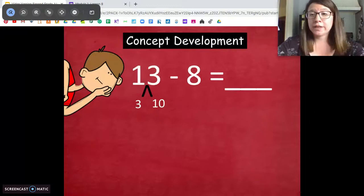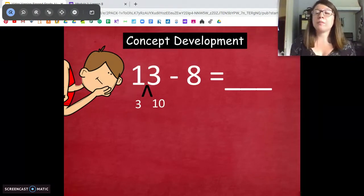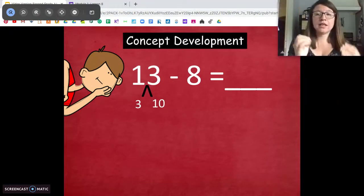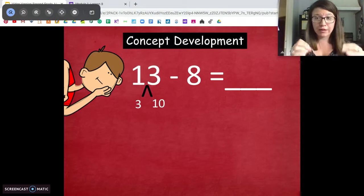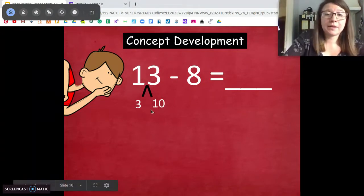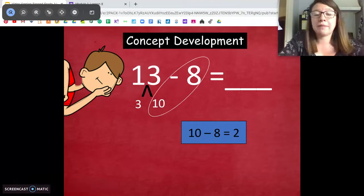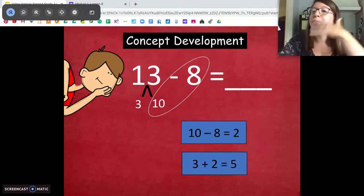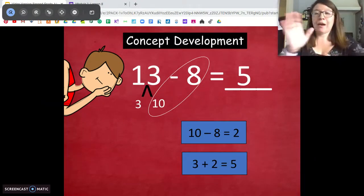Then yesterday, we talked about taking from 10 from numbers under 20. So when we do this, we start by taking 10. When we break 13 apart, we have one 10 and three 1s. So here's our 10. Then we do the same next step. Solve for what we know. 10 minus 8 is 2. Then we take our 2 and add in our extra 1s. 2 plus 3 equals, and our answer is 5.